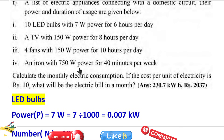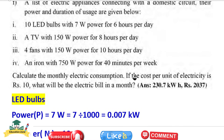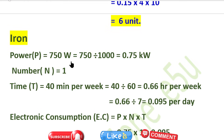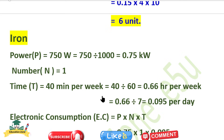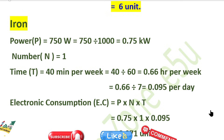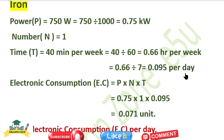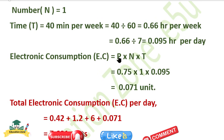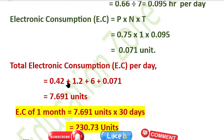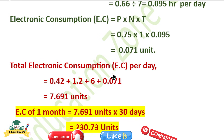Iron: 750 watt = 0.75 kilowatt, used for 40 minutes per day. Time per day = 40/60 = 0.66 hour, giving approximately 0.095 kilowatt-hour per day. Energy consumption for iron = P × N × T = approximately 0.071 units. Total electricity consumption = approximately 7.691 units.